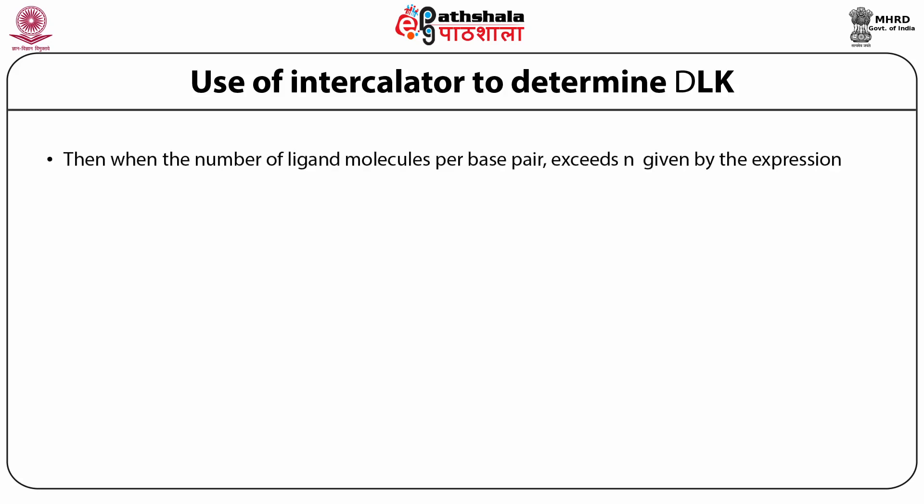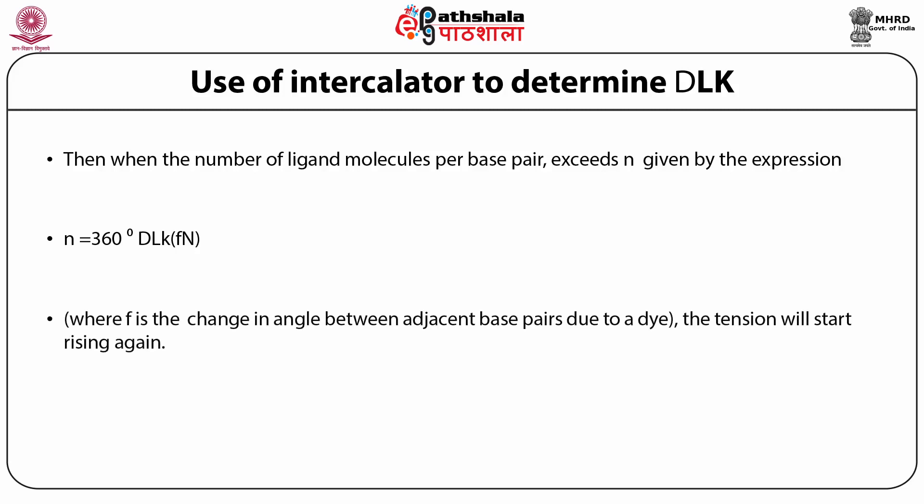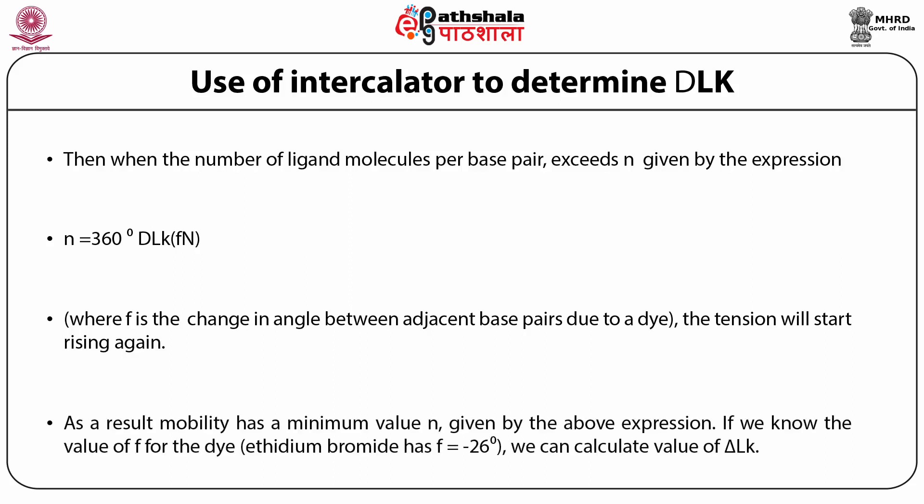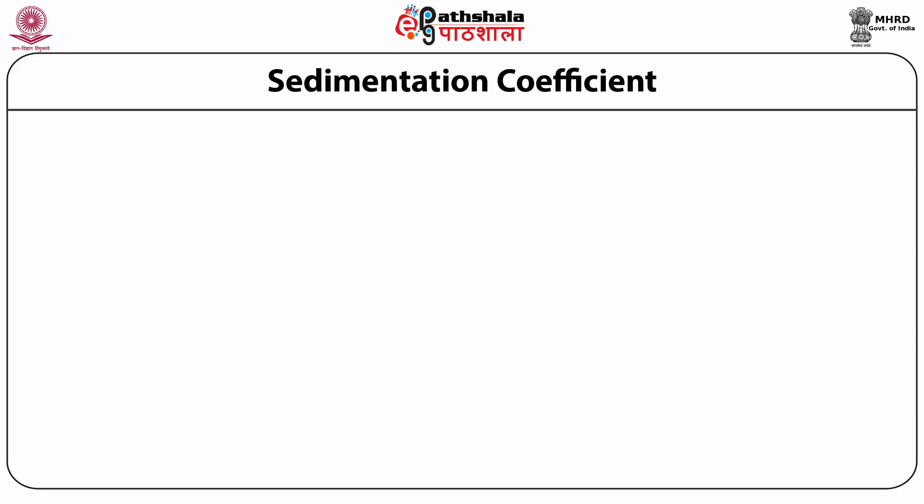When the number of ligand molecules per base pair exceeds nu, given by the expression nu equal to 360 degrees multiplied by delta LK divided by phi times N — where phi is the change of angle between adjacent base pairs due to the dye — the tension will start rising again. Mobility has a minimum value at nu. If we know the value of phi for the dye, for example ethidium bromide has phi equal to minus 26 degrees, we can calculate the value of delta LK.